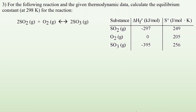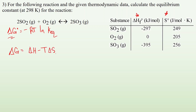Number three: for the following reaction, given thermodynamic data, calculate the equilibrium constant. Working backwards: KEQ is found from delta G0 equals negative RT times ln of KEQ. They didn't give us delta G0 directly, but they gave us delta H and entropy values, so we can use delta G equals delta H minus T times delta S. This is a three-step problem: first find delta H and delta S, then use those to find delta G, then use that to find KEQ.